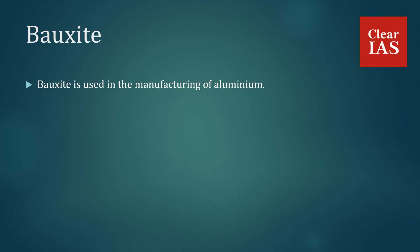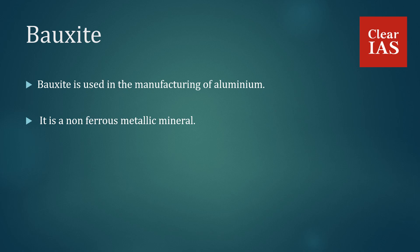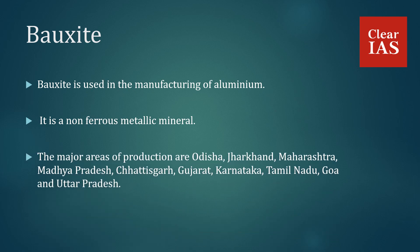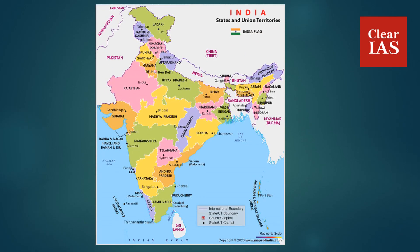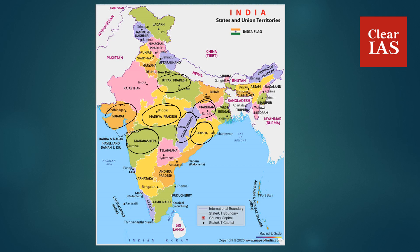Bauxite is used in the manufacturing of aluminum. It is a non-ferrous metallic mineral. The major areas of production are Odisha, Jharkhand, Maharashtra, Madhya Pradesh, Chhattisgarh, Gujarat, Karnataka, Tamil Nadu, Goa and Uttar Pradesh. The important ores are located in Jamnagar of Gujarat, and Koraput and Sambalpur of Odisha.